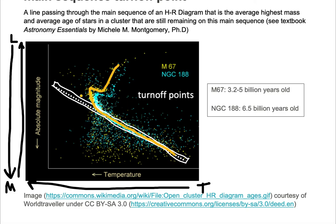Stars that are on the main sequence are in hydrostatic equilibrium — they're stable stars, adult stars, not dying stars. Stars that are evolving off the main sequence are dying stars.